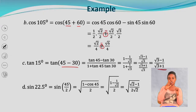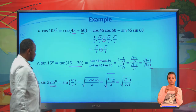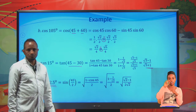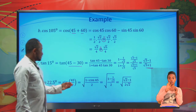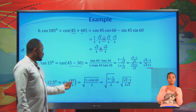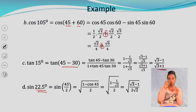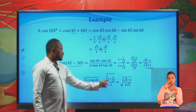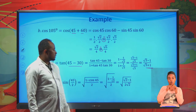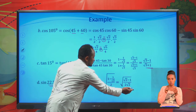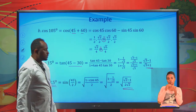For sine 22.5 degrees, we use the half-angle formula. Sine 22.5 can be written as sine of 45 over 2. Using the half-angle formula: sine of 45 over 2 equals the square root of 1 minus cosine 45 over 2. Cosine 45 is root 2 over 2, or 1 over root 2, so this gives the square root of the quantity root 2 minus 1 over 2 root 2.